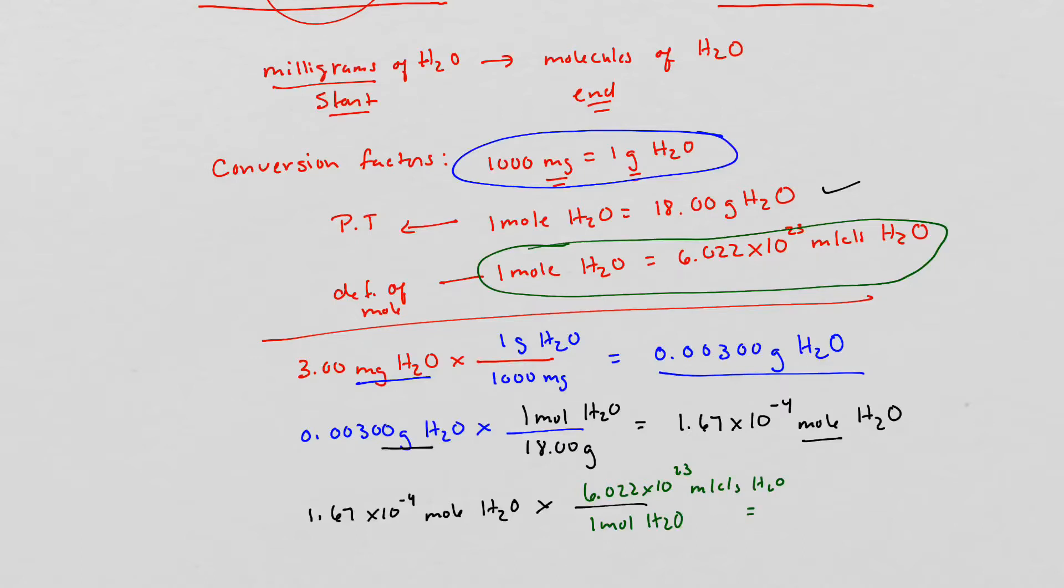So I'm going to take 1.67 times 10 to the negative 4th moles and that gives me 1.00 times 10 to the 20th molecules of water. And this is how many water molecules are in a snowflake. Cool.